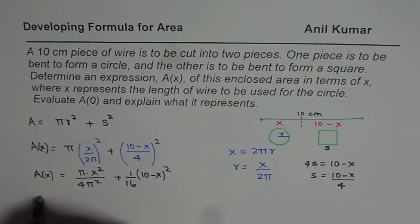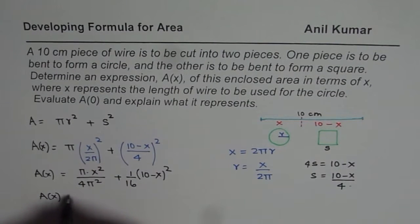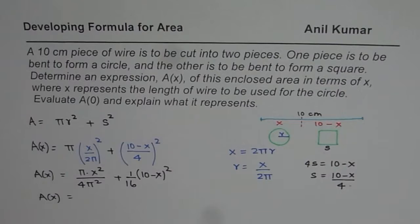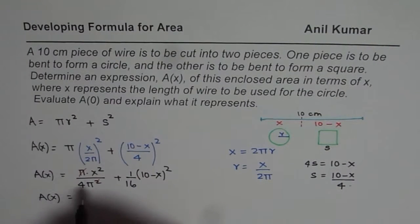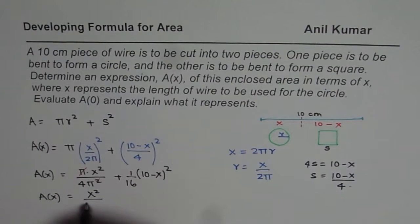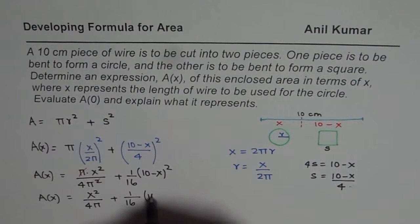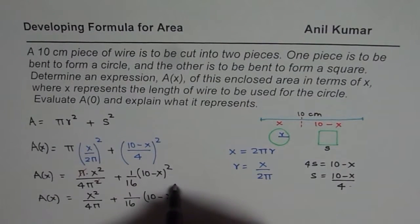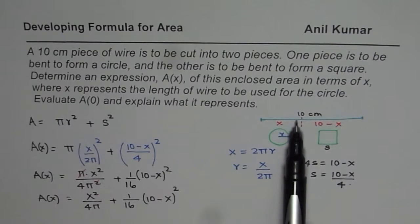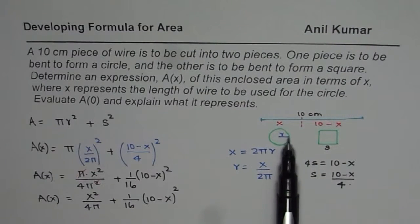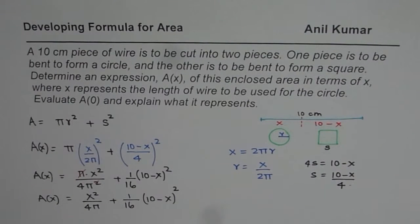So let me write the final expression. When you simplify, one of these π's can get cancelled. So what you get here is x²/4π plus 1/16(10-x)². So that is the expression of area in terms of x, the length of the wire which has been used to form a circle. And that's a combined area. I hope the explanation is absolutely clear.